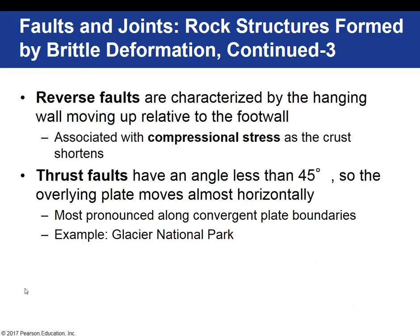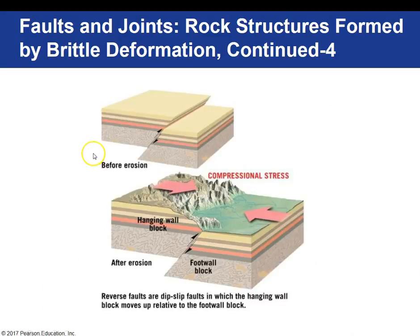Another type of dip-slip fault is the reverse fault, where the hanging wall moves up relative to the foot wall block. This is due to compressional stress. Thrust faults are a type of reverse fault — what we call low-angle reverse faults — and they have an angle of 45 degrees or less. It appears then that the overlying plate moves almost horizontally. Reverse fault: the hanging wall moves up relative to the foot wall, and then after erosion — compression is the stress.